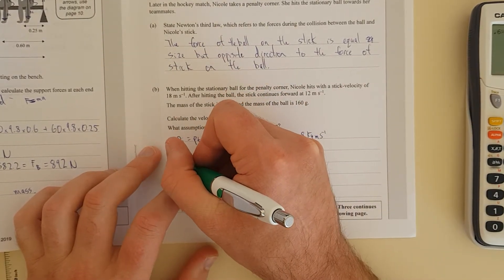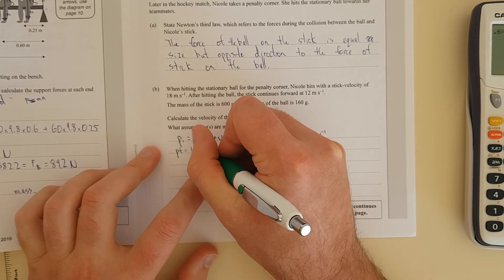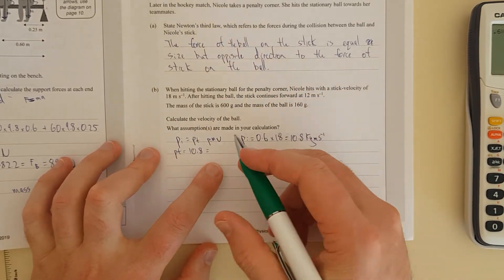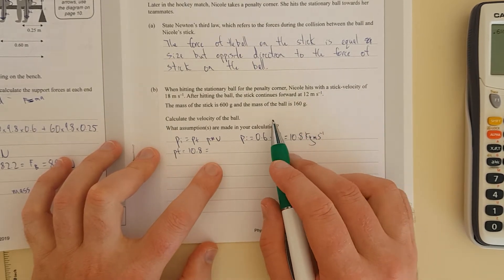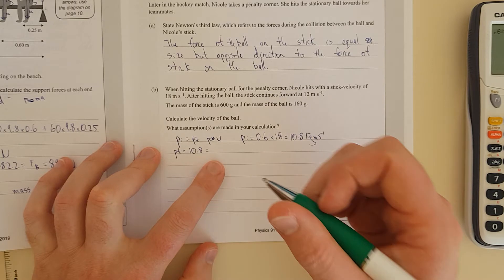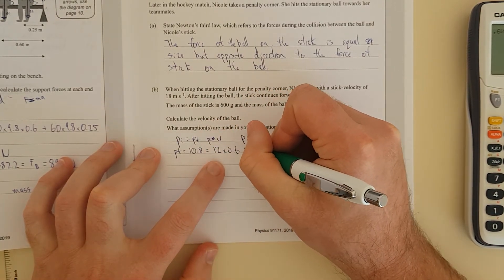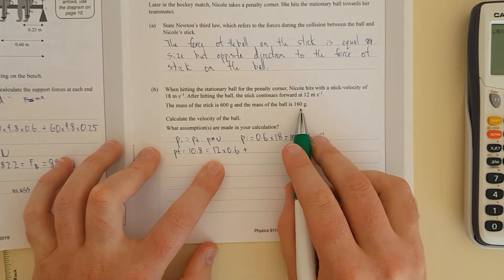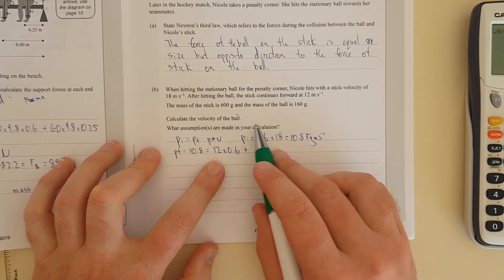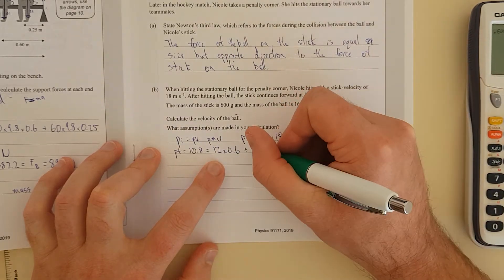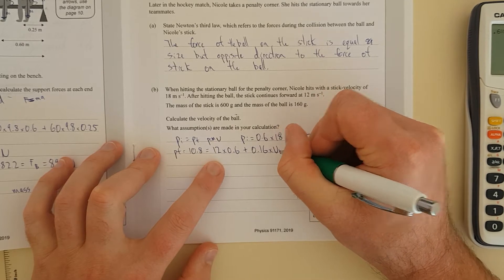So we have PF is equal to 10.8, which is equal to... How am I going to do this? I'll just do this with the final momentum is going to be the momentum of the stick. So that's going to be 12 times 0.6, plus the momentum of the ball, which is going to be... I'm not really sure how fast it is. That's what we're trying to find, aren't we? The velocity of the ball. So I'm going to have mass of the ball 0.16 times VB.